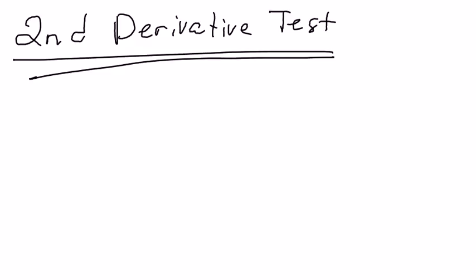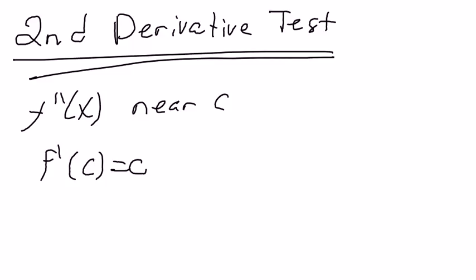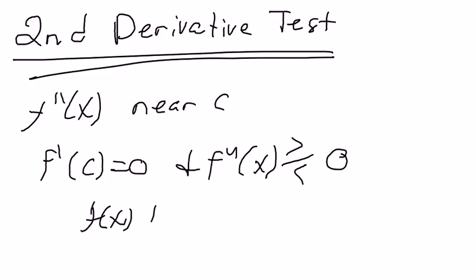If you recall what the second derivative test is, you have a double derivative of x, and it's continuous near the critical point c. Then, when f of c is equal to zero and the double derivative of x near that c is greater than or equal to zero, then f of x has either a local minimum or a local max at that critical point c.